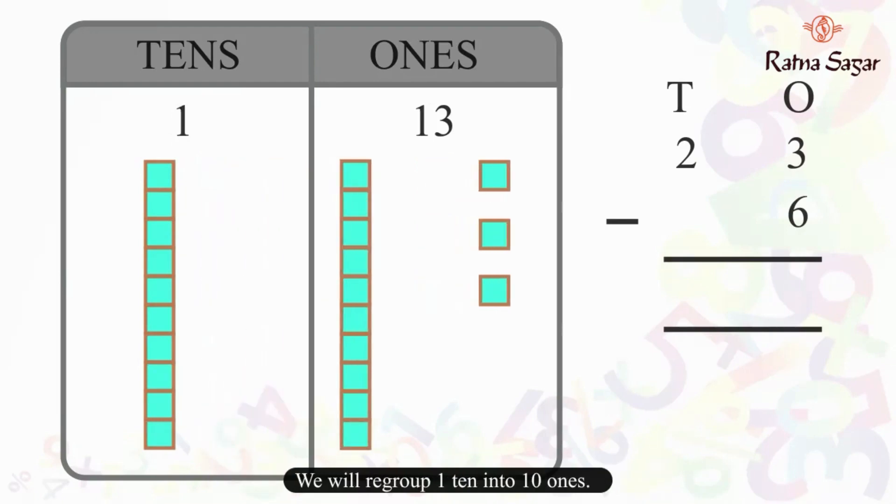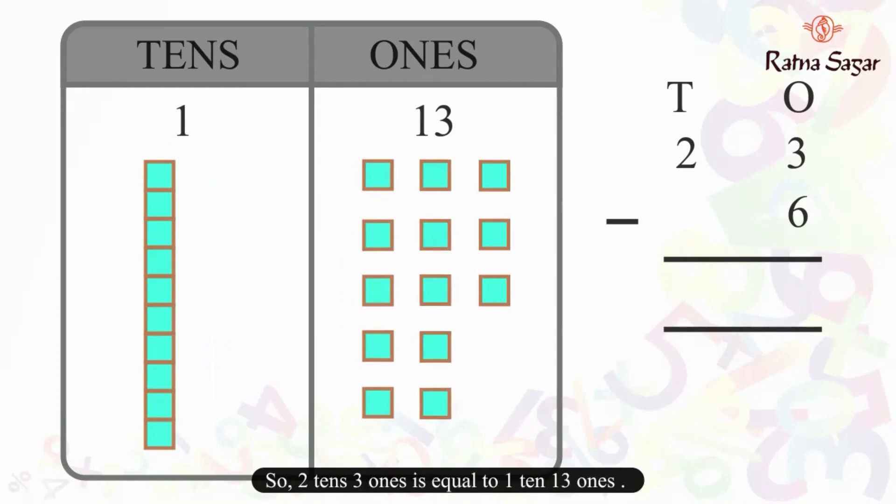We will regroup 1 ten into 10 ones. So, 2 tens 3 ones is equal to 1 ten 13 ones.